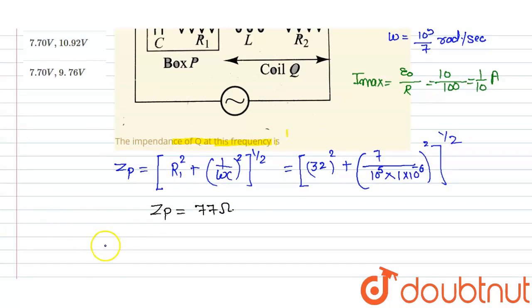Next part, now we calculate ZQ. ZQ is equivalent to R2 square plus omega L, whole square, power 1 by 2. R2 is equivalent to 68, whole square, plus omega is 10 to the power 5 upon 7 into 10 to the power 3 multiplied by 4.9. We write that as 4.9 milli, square, and power is 1 by 2.